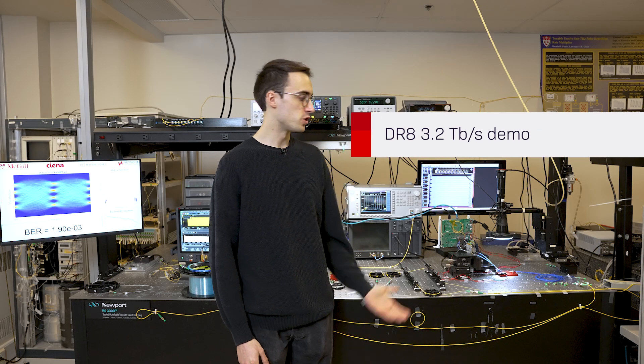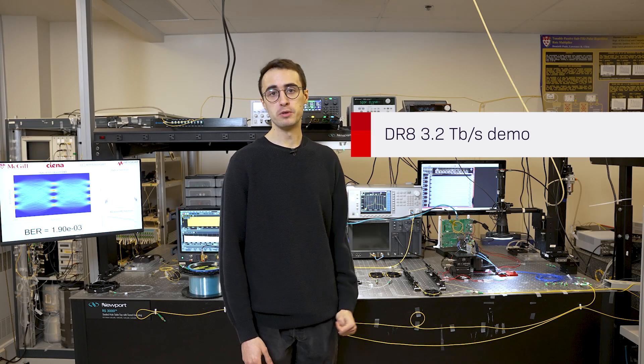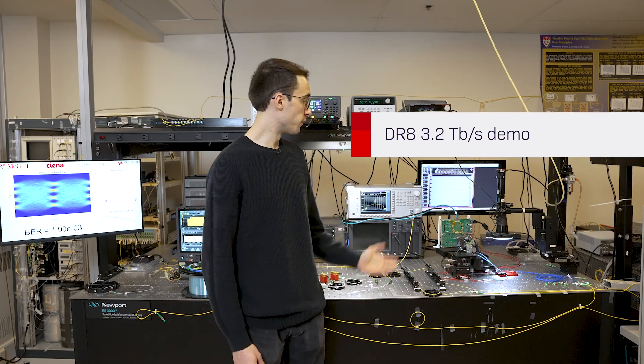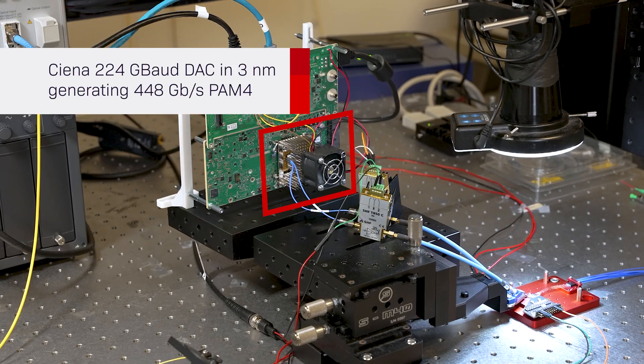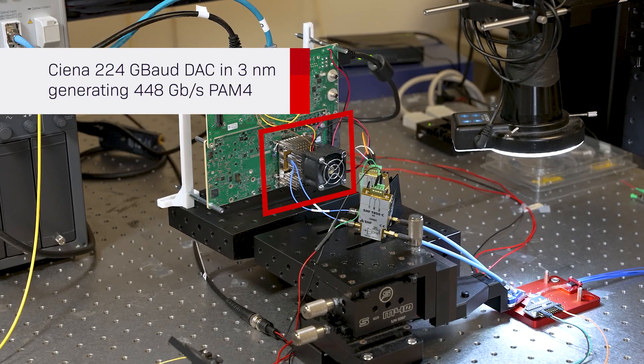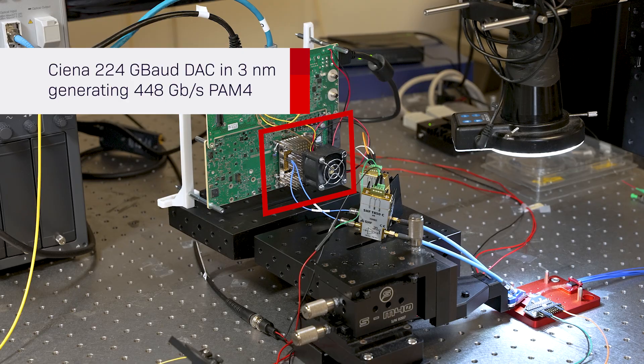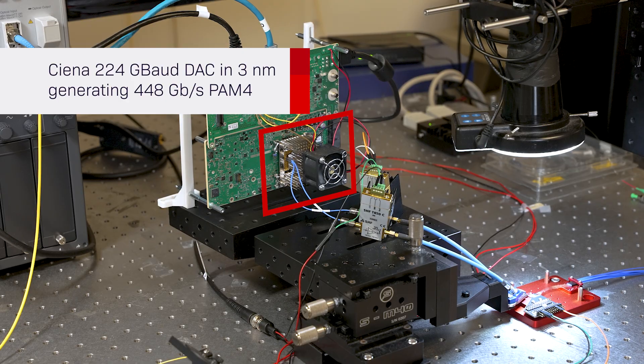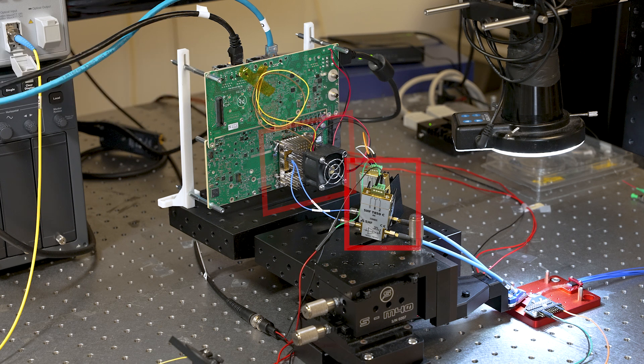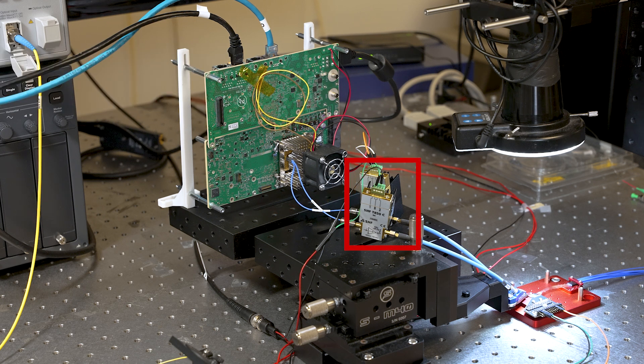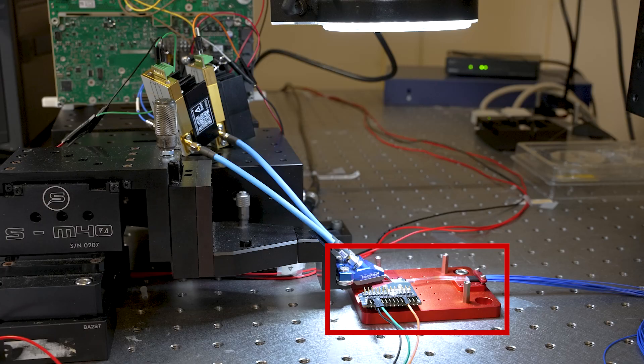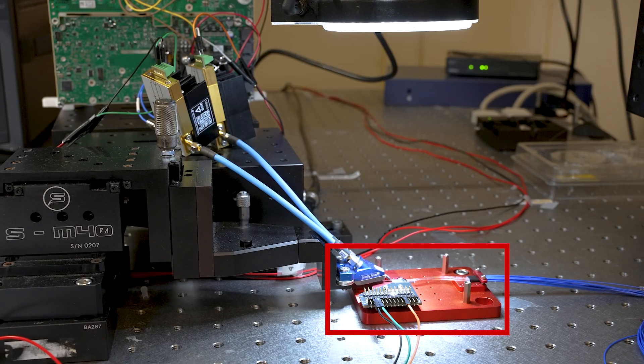For the second demonstration, we show a DR8 3.2 terabit per second experiment where we use McGill's digital signal processing to program Ciena's 3 nanometer 224 gigabaud DAC to generate a 448 gigabit per second PAM4 electrical signal. This signal is amplified differentially using two commercially available RF amplifiers and drives the photonic integrated circuit through an RF probe.